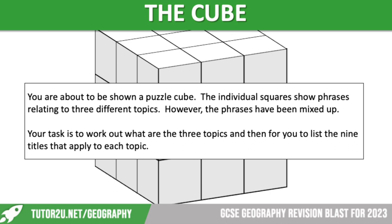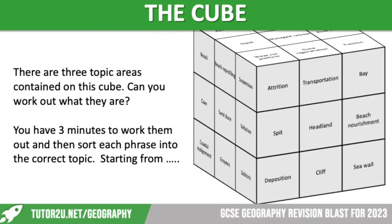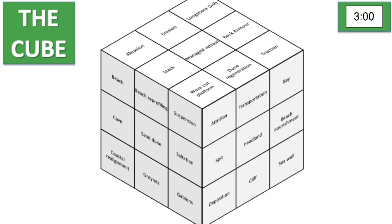We have one more activity — the cube. You're going to be shown a puzzle cube. The individual squares show phrases relating to three different topics, but the phrases have been mixed up. Your task is to work out what the three topics are, and then list the nine items that apply to each topic. You'll need a pen and paper. There are 27 key terms that need to go into three groups. You've got three minutes starting now.